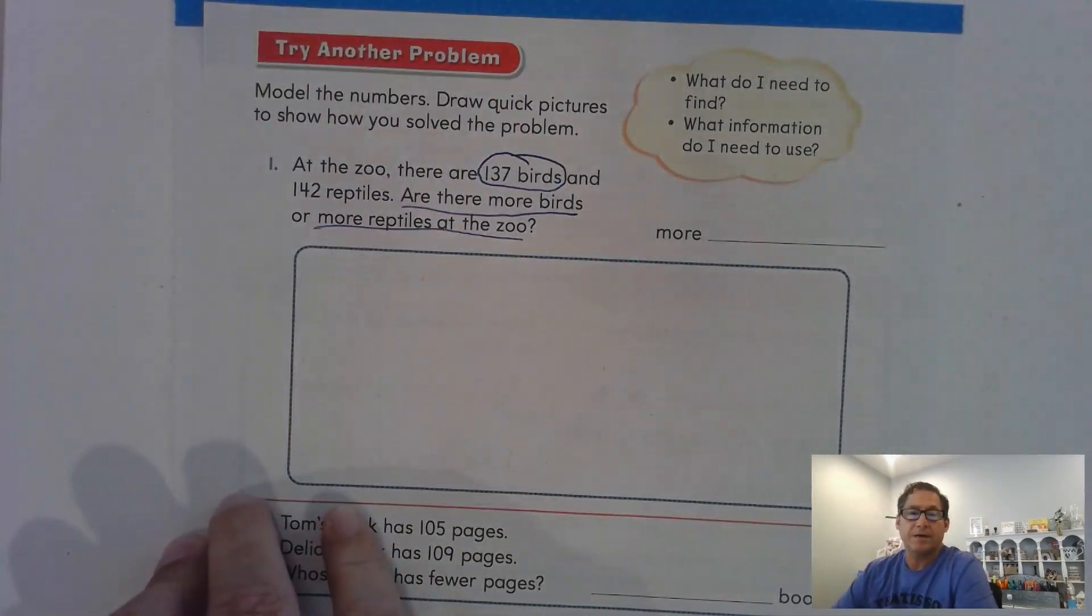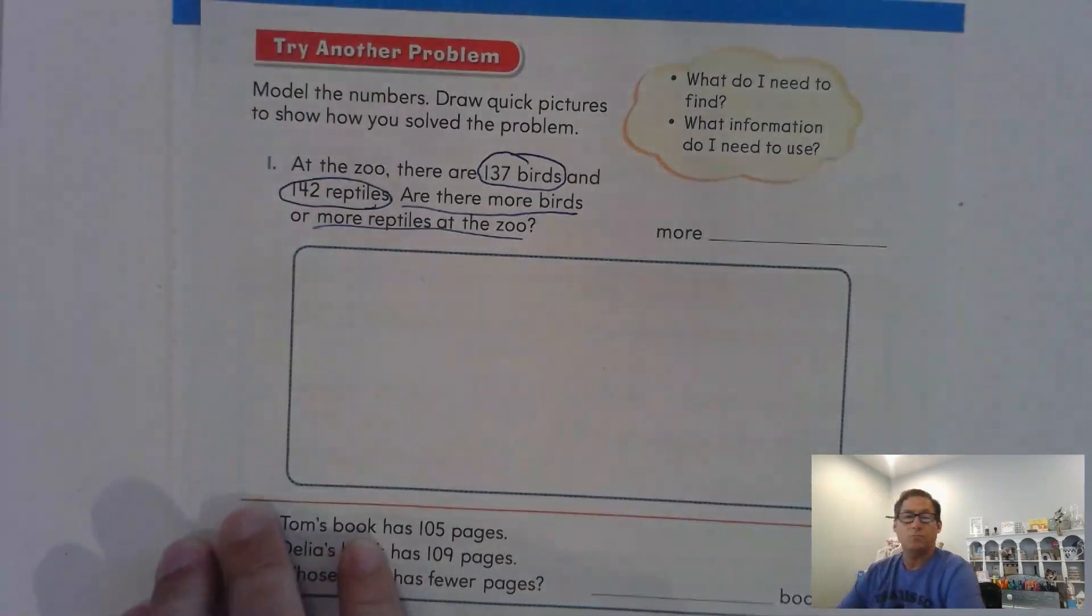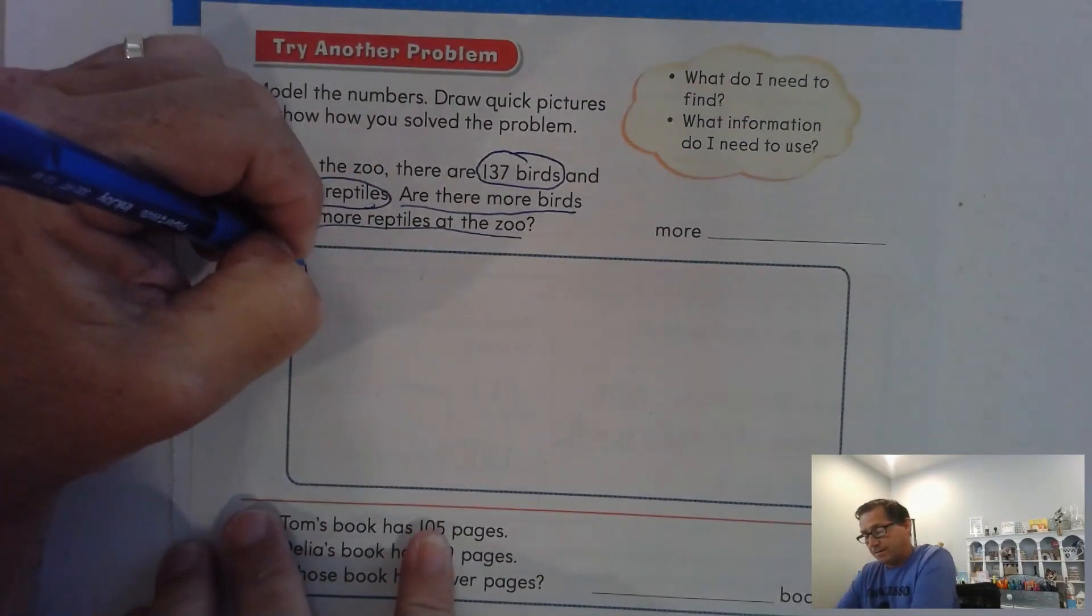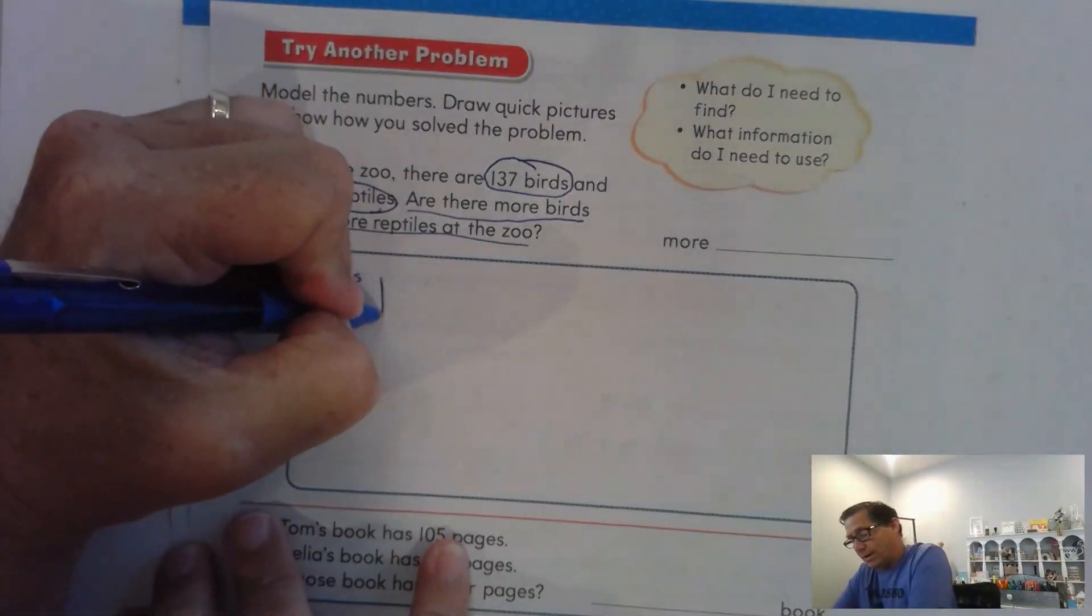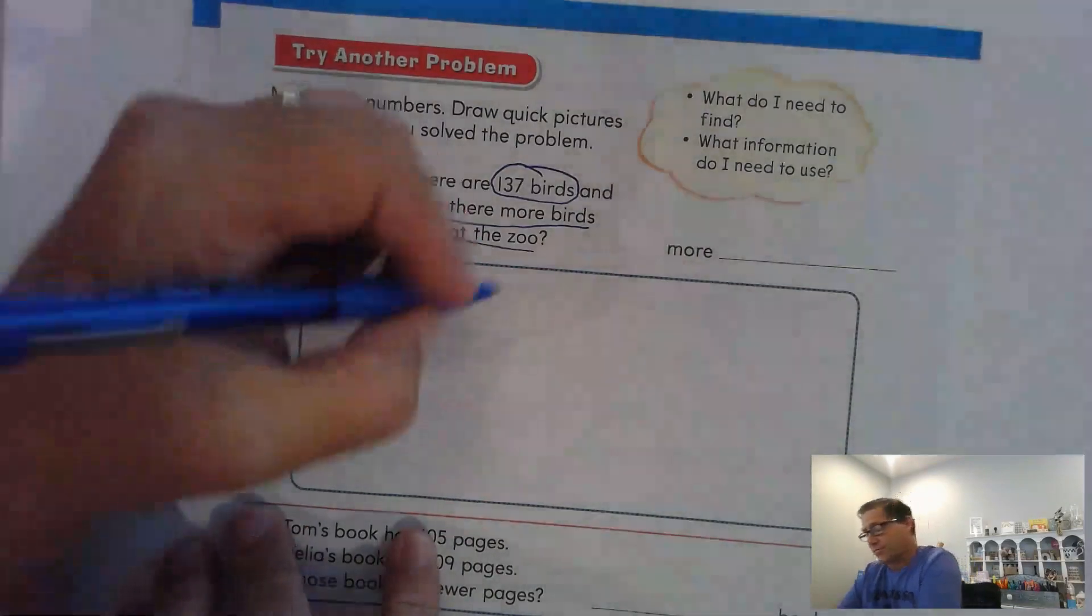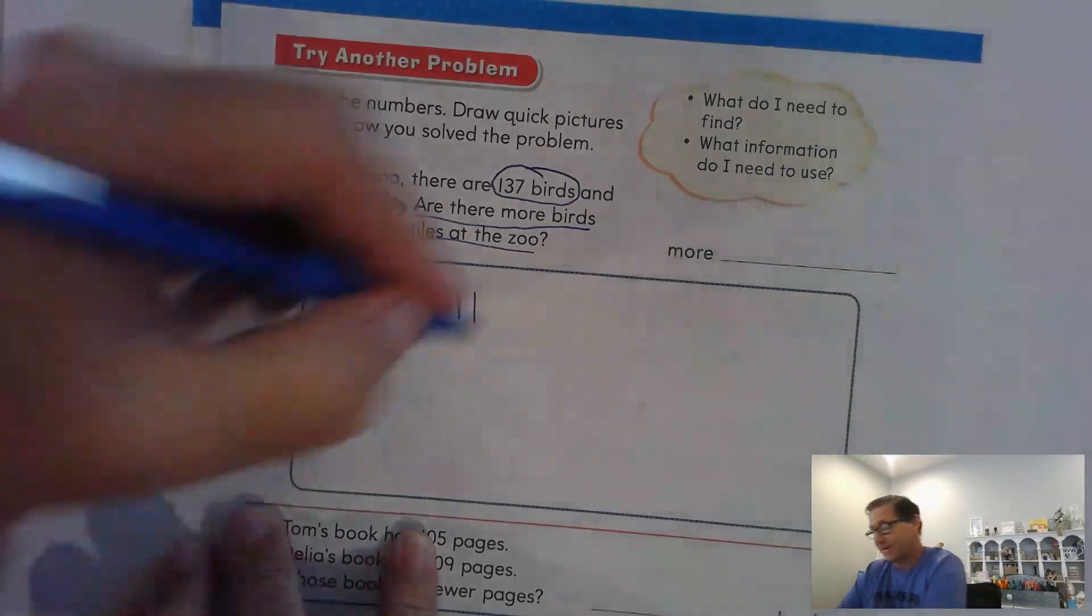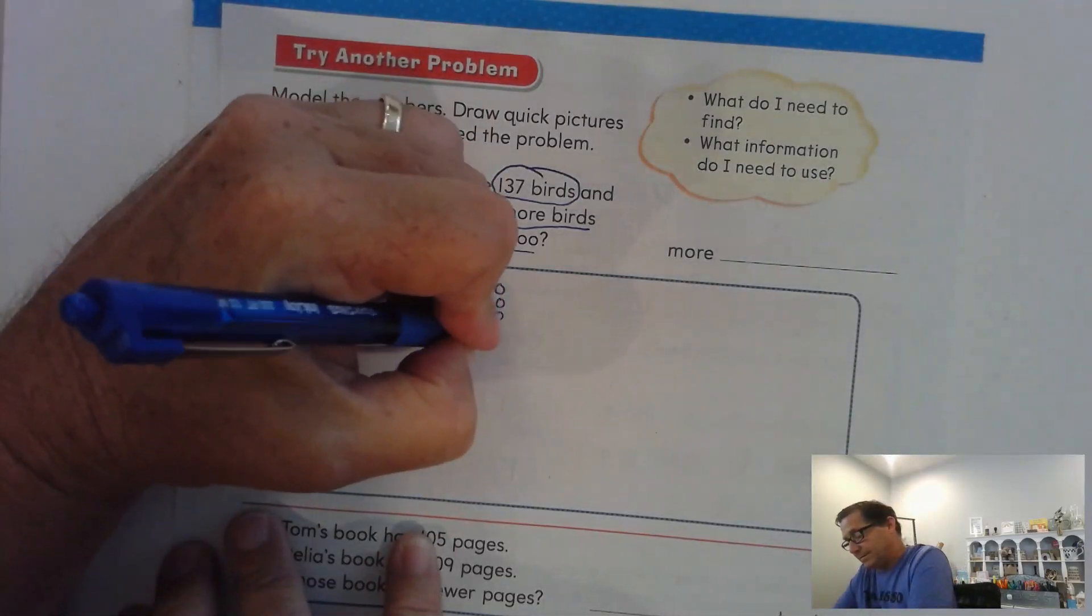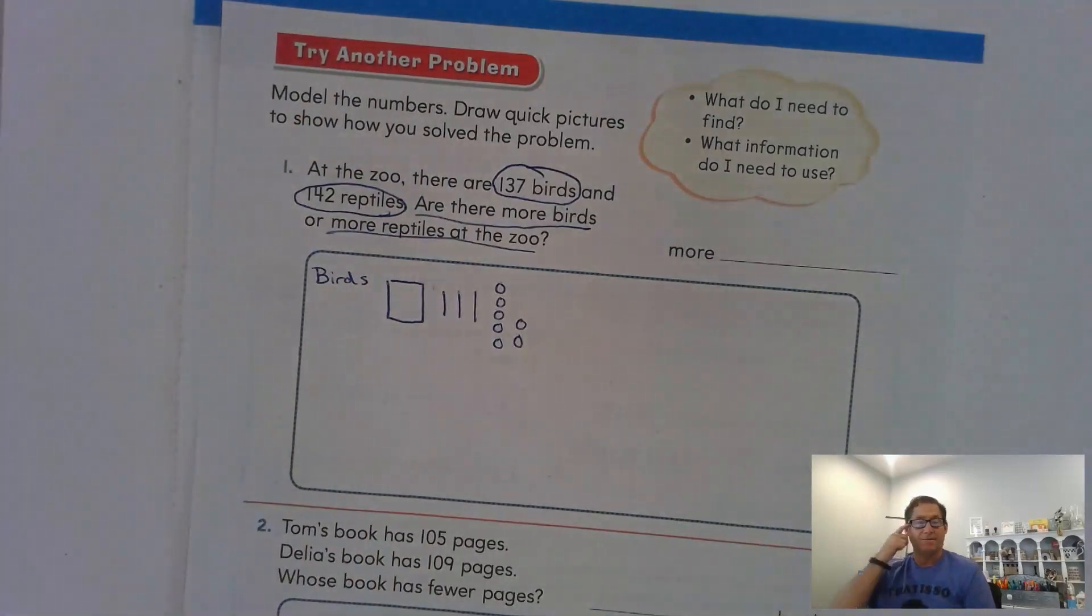That's what I need to find. I'm going to circle that. There's 137 birds. I'm going to circle that. There's 142 reptiles. So I'm going to draw a quick picture for the birds. 100 would be one square. 30 would be represented by three tens and seven ones. So that's 137 for the birds.